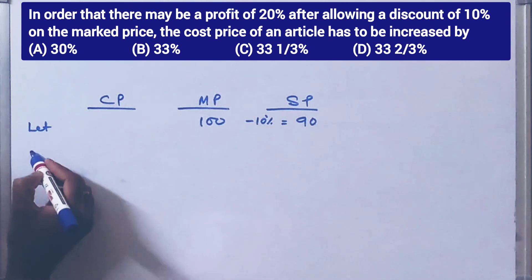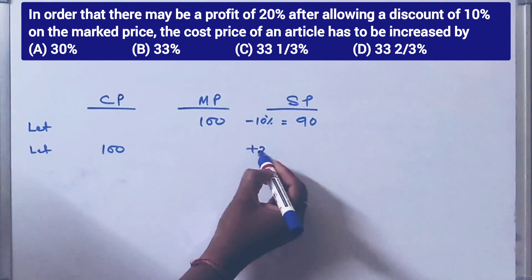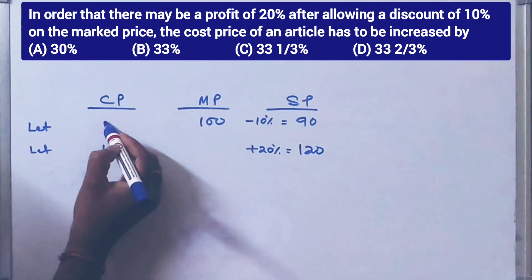Let cost price is 100, so profit is 20, so selling price is 120.